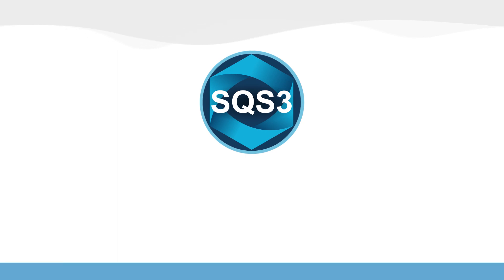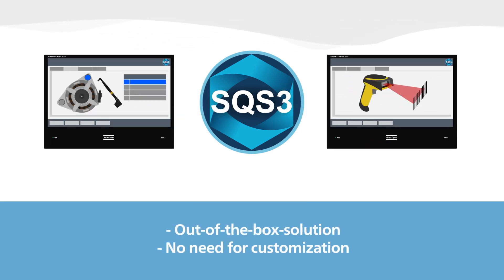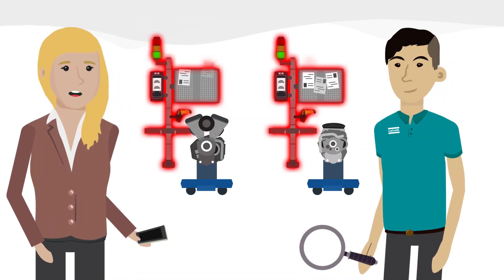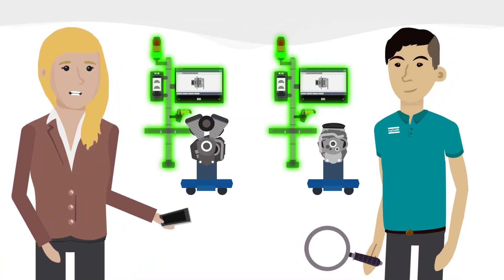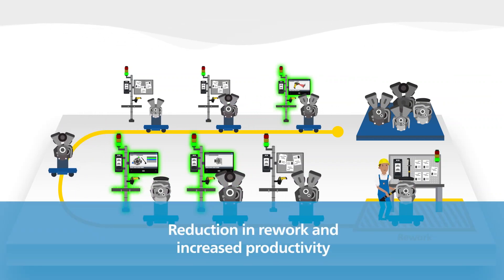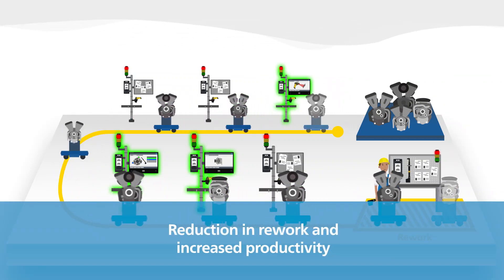SQS3 error-proofing software with operator guidance is an out-of-the-box solution without need for customization. Once implemented in the critical stations, we identified a significant reduction in rework, saving costs and increasing our productivity.